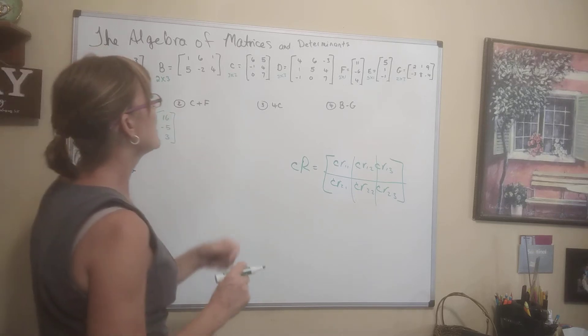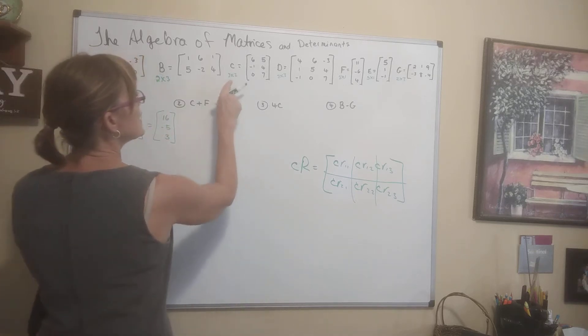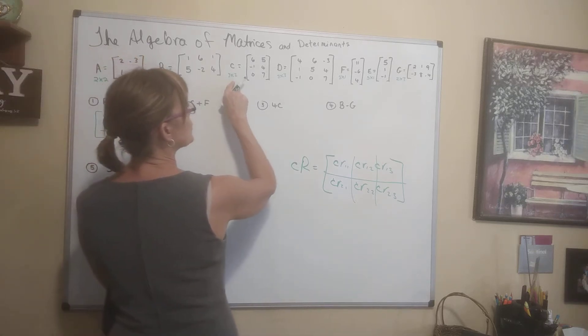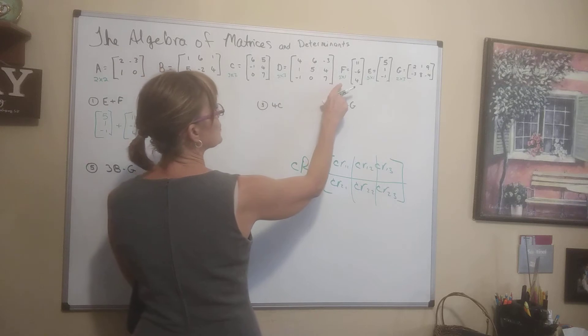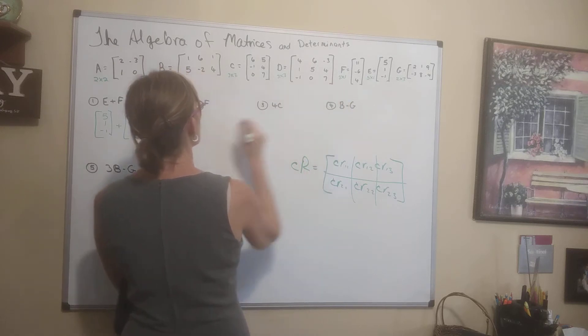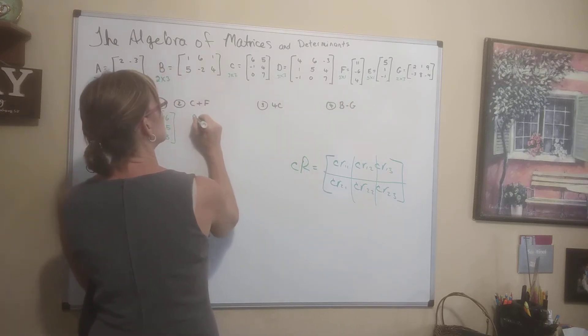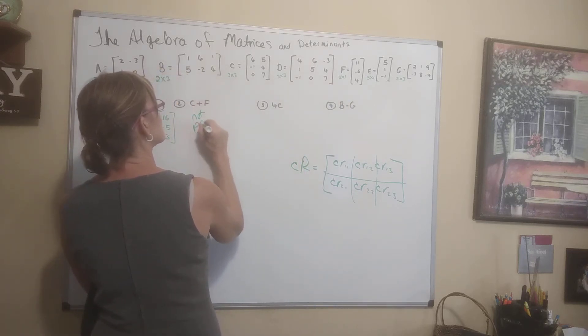C plus F: C is 3 by 2 and F is 3 by 1 — not the same size. Not possible.